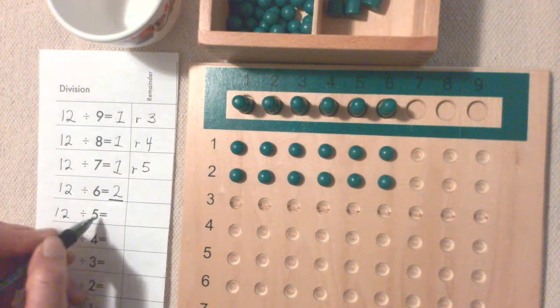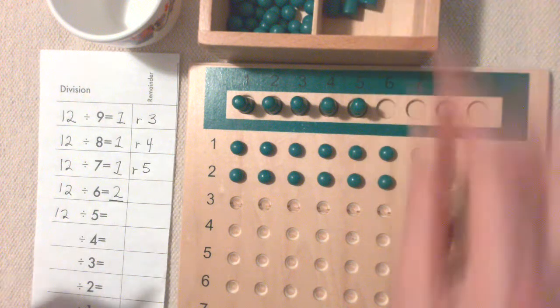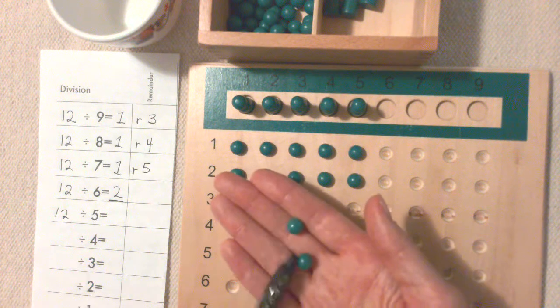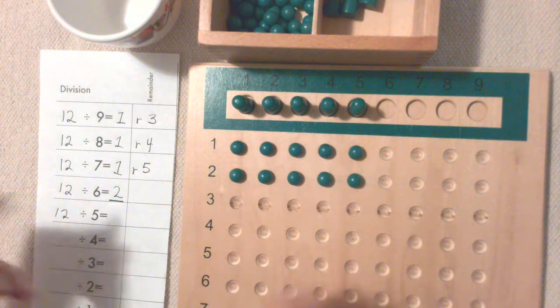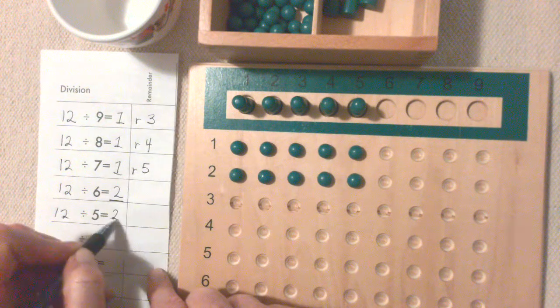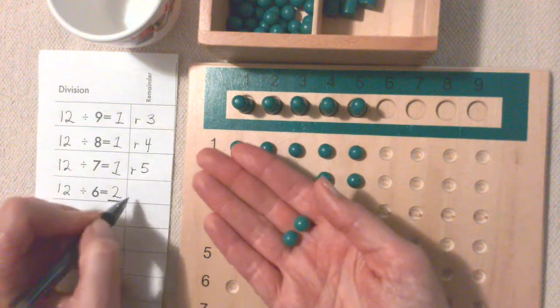12 divided by 5. Take one away. And there's not enough to give each Skittle another bead. So the answer is two remainder two.